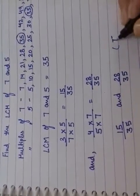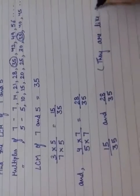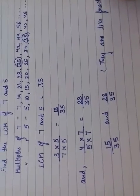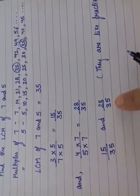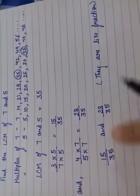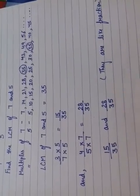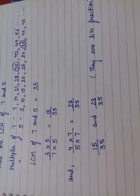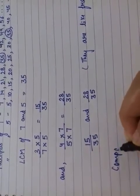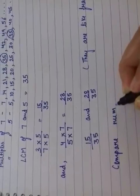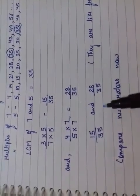Now they both are like fractions. Why do we call them both like fractions? Because they both carry the same denominator. Now this is converted into like fractions. Then start doing comparison. Compare numerators.